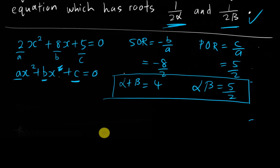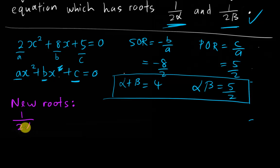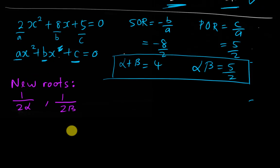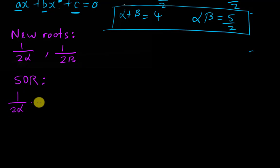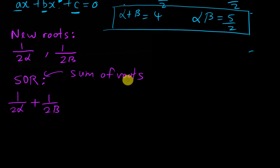Let me use a different color — purple — and call these the new roots. We have two new roots: 1 over 2 alpha and 1 over 2 beta. No matter how complicated the new roots are, what you always do is the same. I will compute the new sum of roots, which means adding both roots together: 1 over 2 alpha plus 1 over 2 beta. SOR means sum of roots, and POR means product of roots.